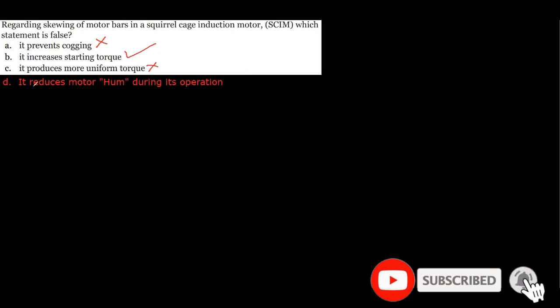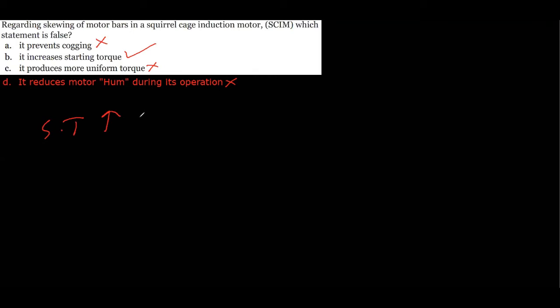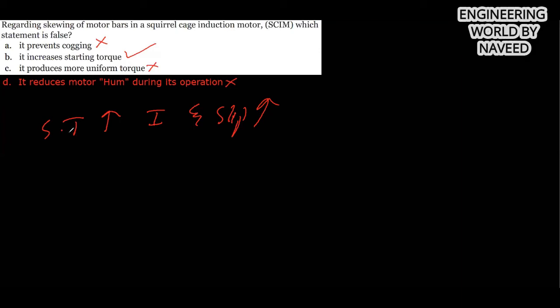The next MCQ: regarding skewing of motor bars in a squirrel cage induction motor, which statement is false? It prevents cogging — no. It increases starting torque — yes, this is the false statement. It produces more uniform torque — no, not false. It reduces motor hum during operation — also not false. So option B is the correct answer, because skewing does not increase starting torque; starting torque increases by increasing current and slip.